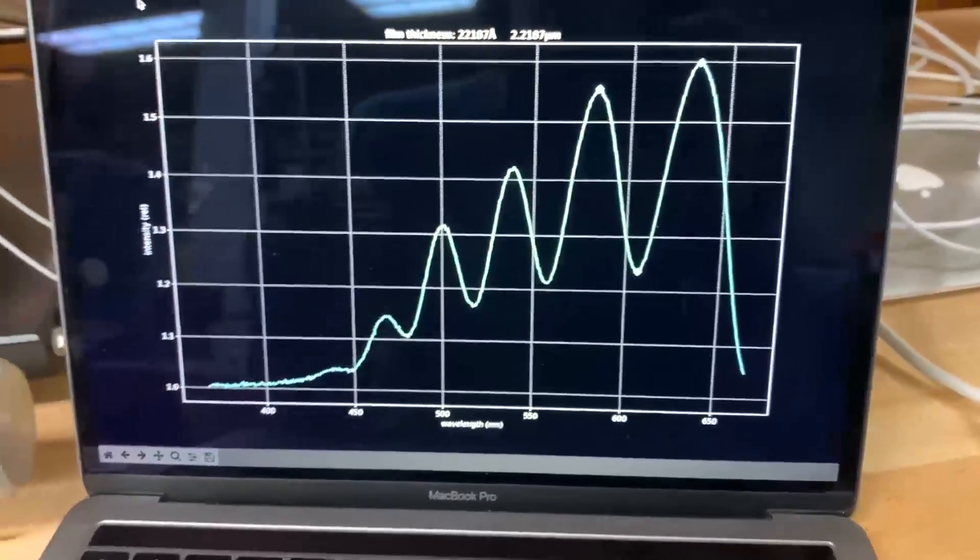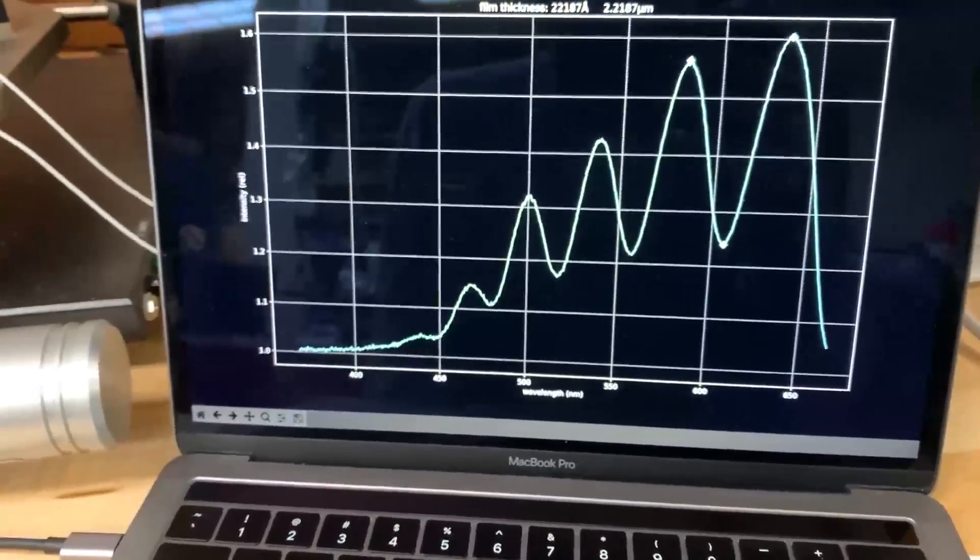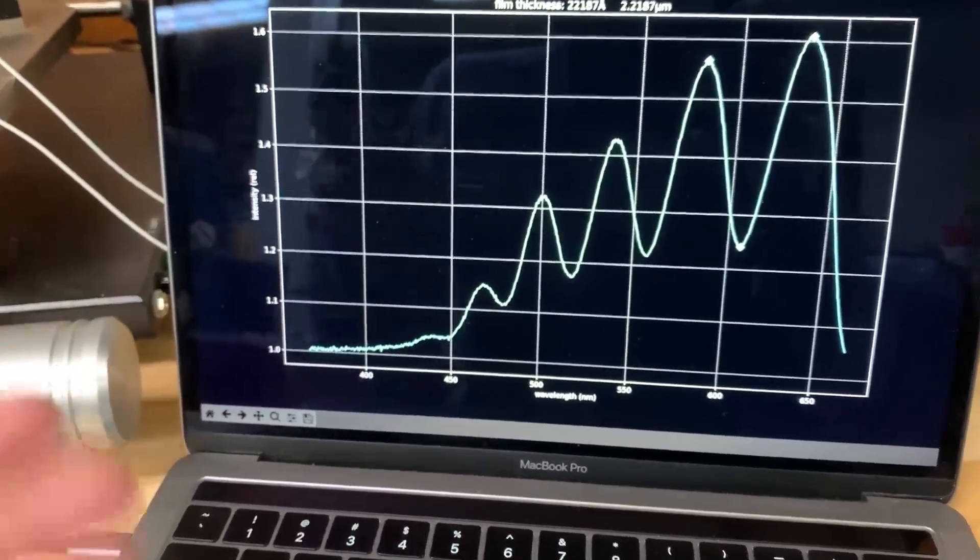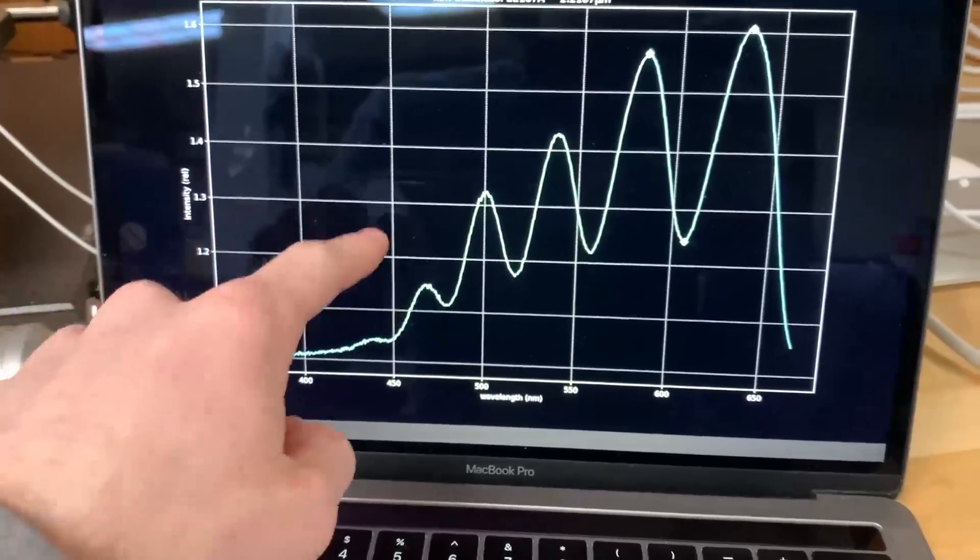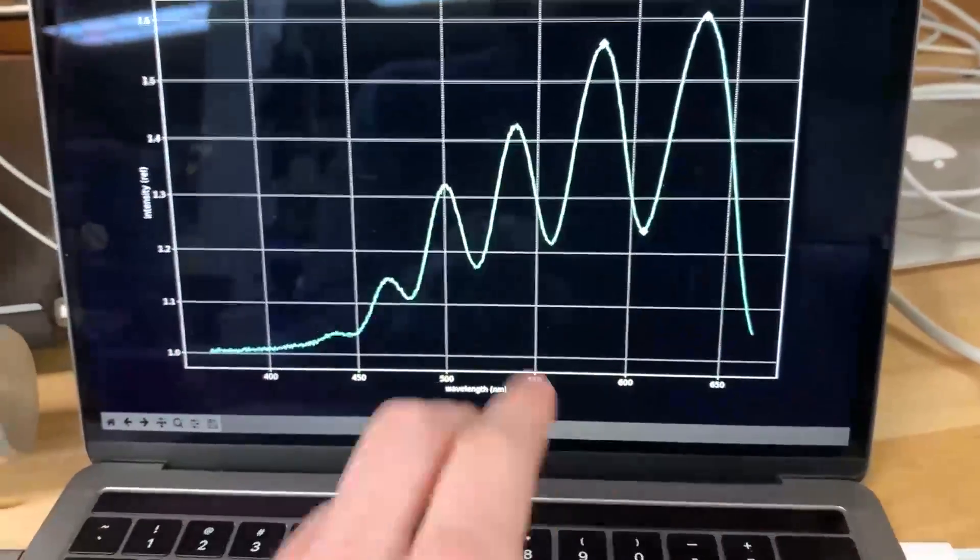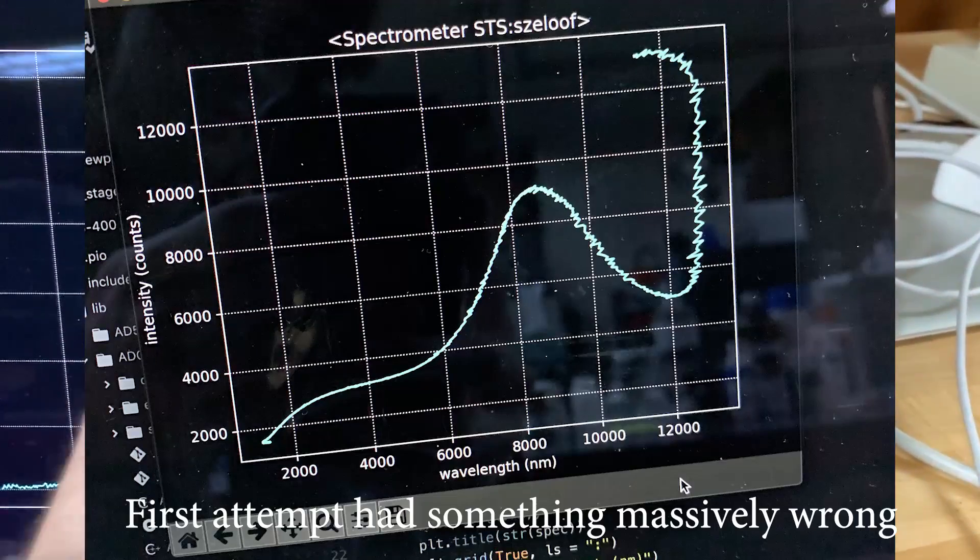In any case we have a film of some thickness and different wavelengths will go through that film or be reflected off that film with different intensities. So that's all we're measuring here is kind of the relative intensity of all these different wavelengths.